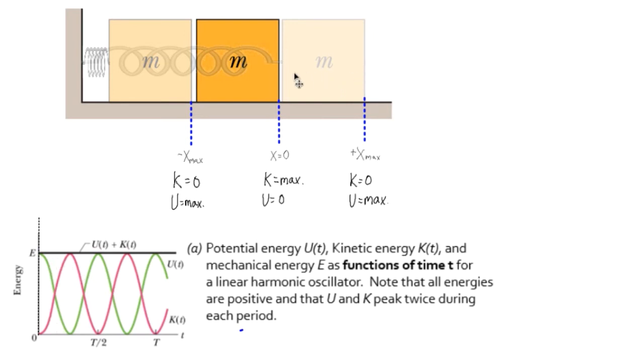Then as it oscillates through the center point, that will be this position right here. Now the potential energy is zero because the spring is at its relaxed length here, and it's not stretched or compressed, and it's moving with its maximum velocity, so it has maximum kinetic energy. So that's this point right here.